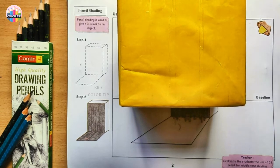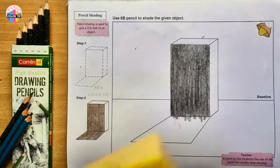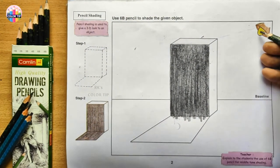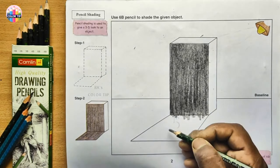In the same way, the light source is from this way, the shadow will be in the opposite direction. That means here. Let us shade this one.